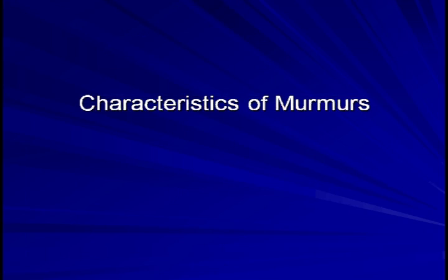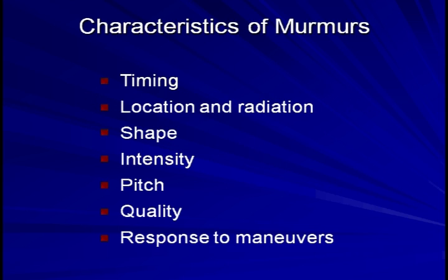Now I will talk about the specific characteristics of murmurs. Although often the cardiac portion of the patient's physical exam may read something vague, such a statement is of little diagnostic help. Murmurs can and should be described based on a number of specific characteristics: timing, location and radiation, shape, intensity, pitch, subjective quality, and the response to specific physiologic maneuvers.